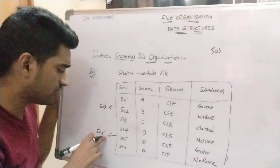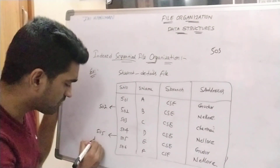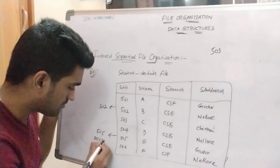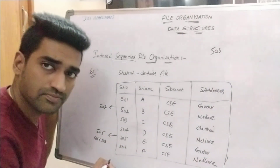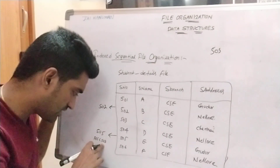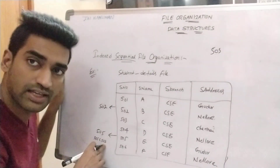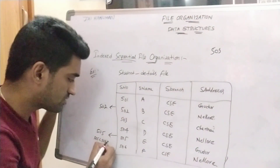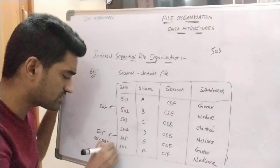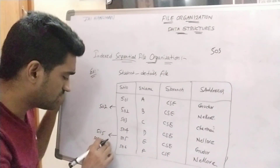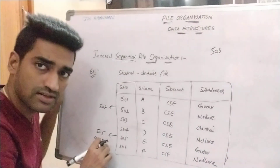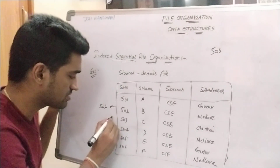So first of all, we are comparing 505. So 505 less than 503 — condition is failure. So that is why we can search the left sublist. Otherwise we can search the right sublist. So here, 505 is less than 503 — condition is failure, so we can search this sublist.